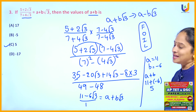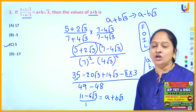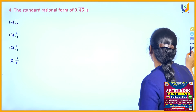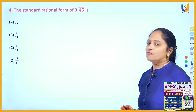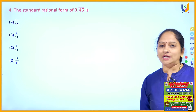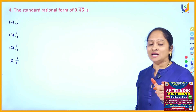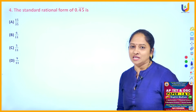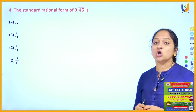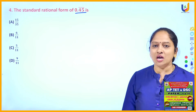Wherever you find such irrational numbers, the only procedure is to rationalize the denominator. The next question: the standard rational form of 0.45̄ (bar on 4 and 5). Such decimals are called non-terminating repeating decimals — whatever digits are under the bar will repeat infinitely many times.